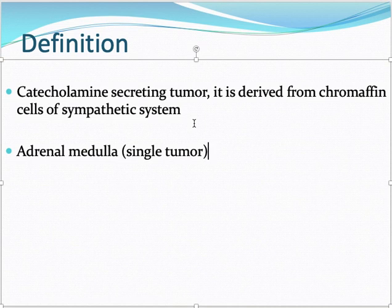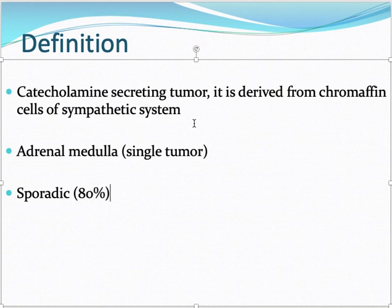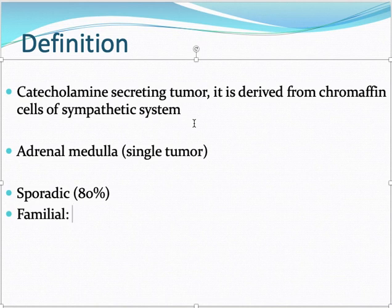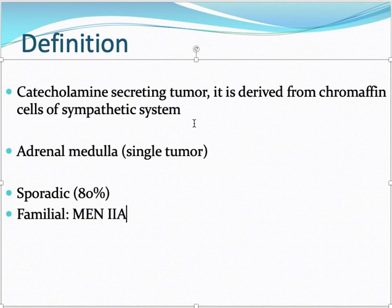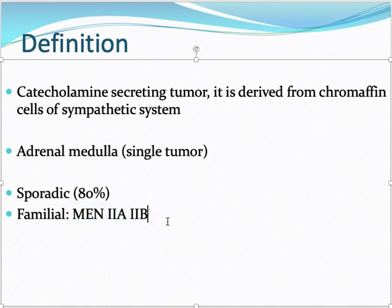Most cases — about 80% of the time — are sporadic, meaning they come out of nowhere. A few cases can be familial, running in families. In those cases, it comes in association with multiple endocrine neoplasia type 2, type 2a, and type 2b.